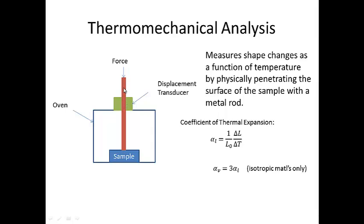A displacement transducer measures the displacement of the rod as a function of temperature. This allows us to calculate the coefficient of thermal expansion as the change in the dimension of the sample divided by the change in temperature times one over the original length of the material. This gives us what's known as the linear coefficient of thermal expansion or alpha sub L.